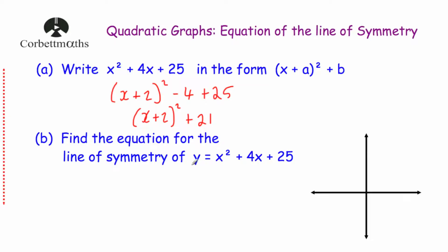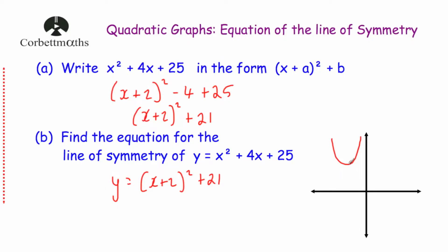Part b: find the equation of the line of symmetry of y equals x squared plus 4x plus 25. Since we've done completing the square, we have y equals (x + 2)² + 21. Starting from the x squared graph, the plus 2 inside the bracket moves the graph two squares to the left, and the plus 21 moves it 21 squares upwards. So the turning point moves from the origin to minus 2, 21. The line of symmetry passes through minus 2 on the x-axis, so the equation is x equals minus 2.